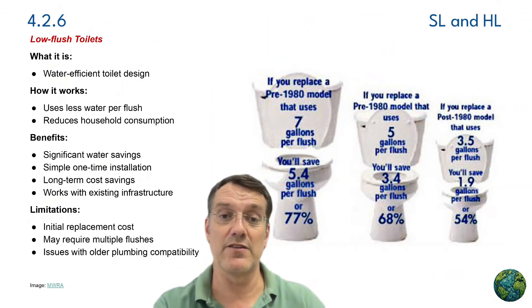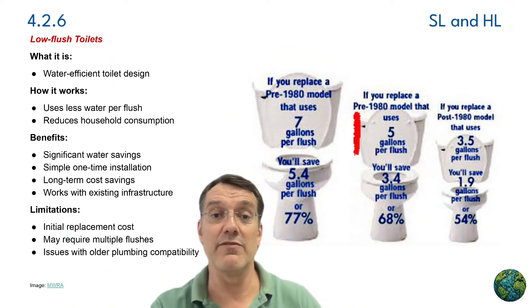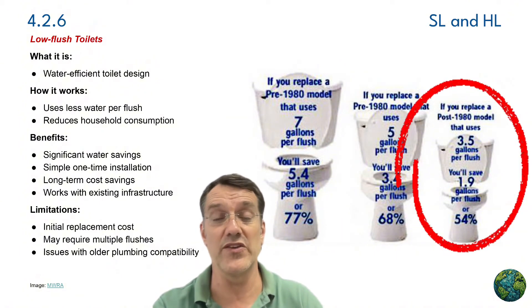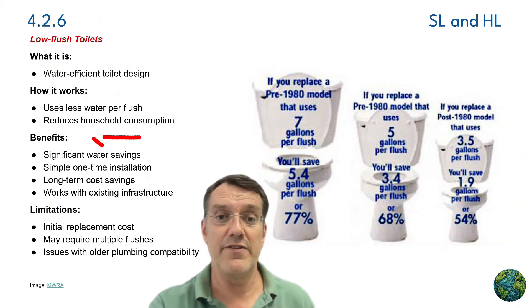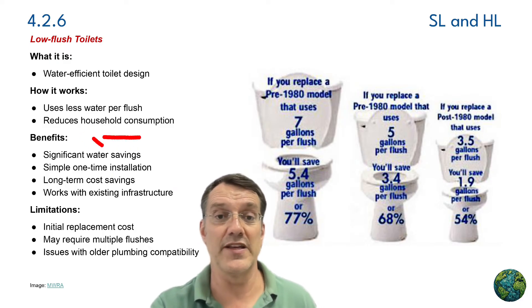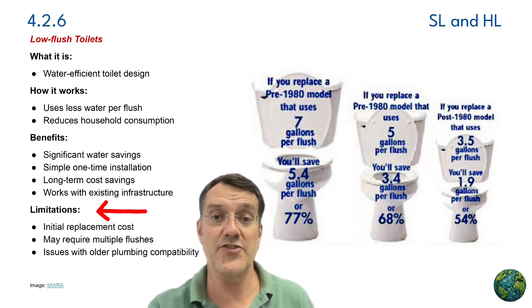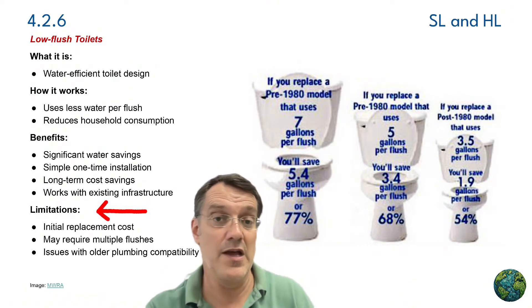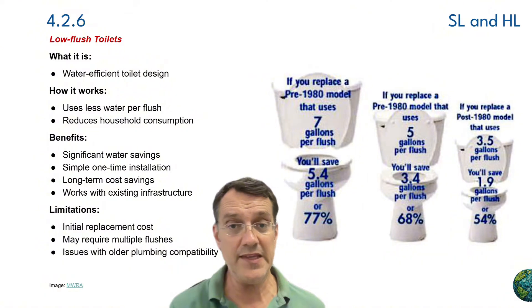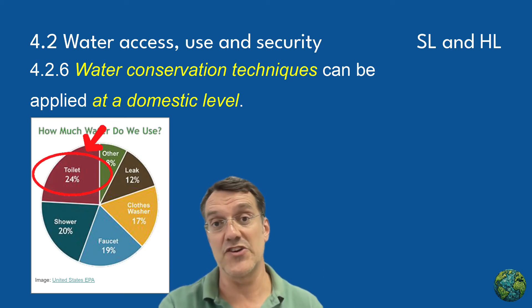Low flush toilets represent a simple but effective water conservation technology. Traditional toilets use between 5 and 7 gallons (20 to 25 liters) of water per flush, while modern low flush toilets use just 1.3 to 1.6 gallons (roughly 5 to 7 liters). Benefits include significant water savings of up to 70 percent, simple one-time installation, long-term cost savings, and compatibility with existing plumbing infrastructure. Limitations include initial replacement costs, the potential for multiple flushes with older models, and compatibility issues with some older plumbing systems. Given that toilets account for about a quarter of all household water use, low flush toilets offer really substantial conservation potential.